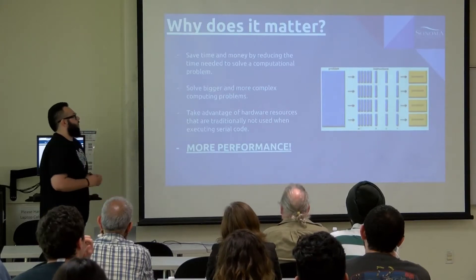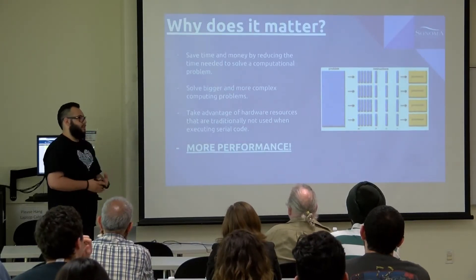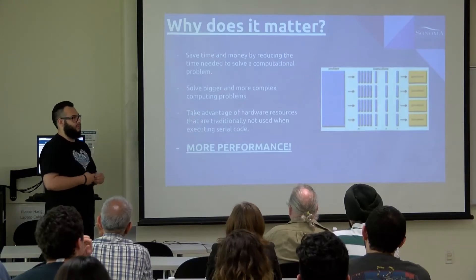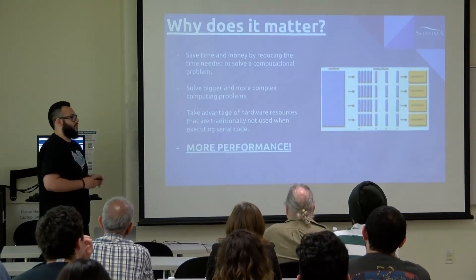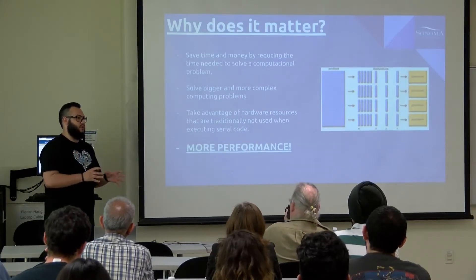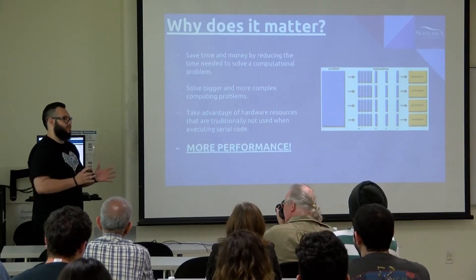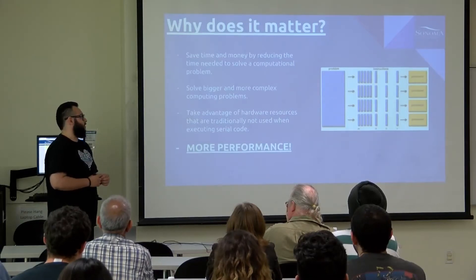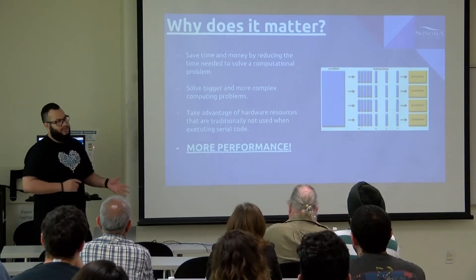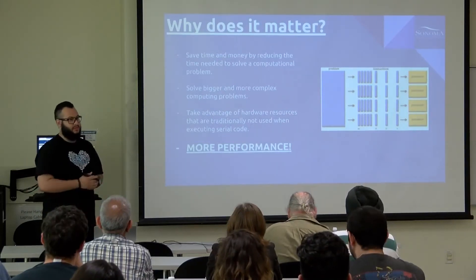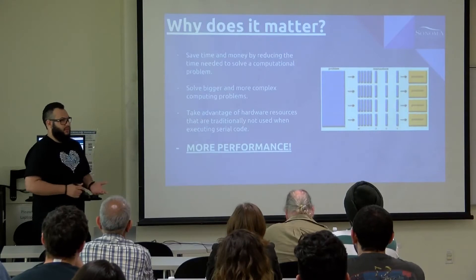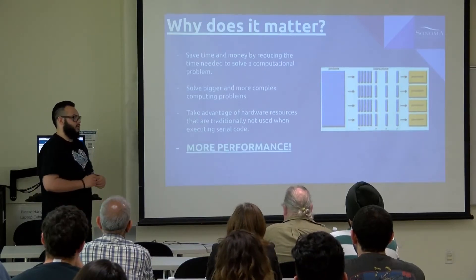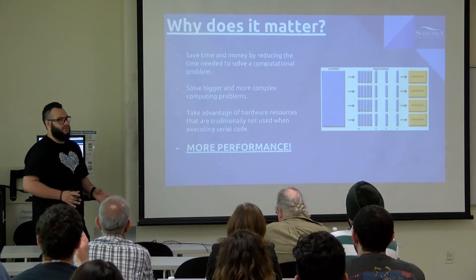Why does this all matter? We can save time and money by reducing the time needed to solve a computational problem, increase performance by reducing execution time, and save money by not having to power computers for as long. We can solve bigger and more complex problems by allocating all resources to one problem — the more resources we bunch together, the bigger the problem we can solve. We can take advantage of hardware resources that are traditionally not used when executing serial code. Most processors have multiple cores, but when we write code we're usually only running on one thread, one core. Using parallel libraries and techniques, we can use all our resources to tackle a problem.